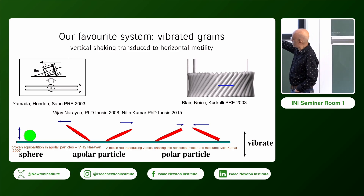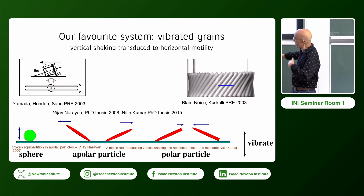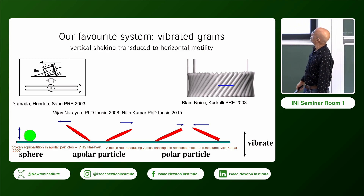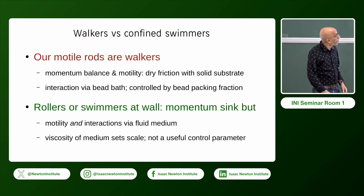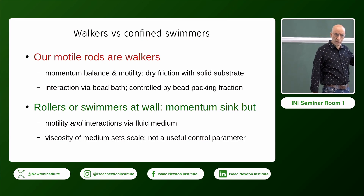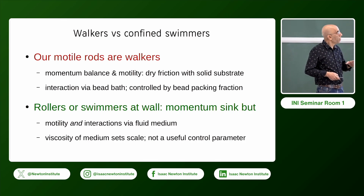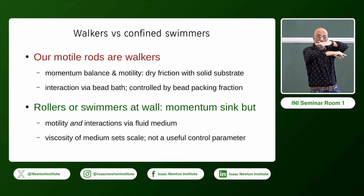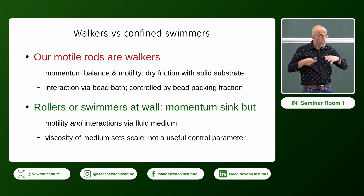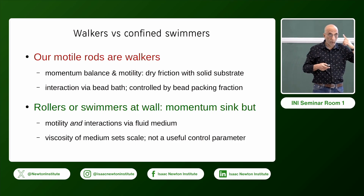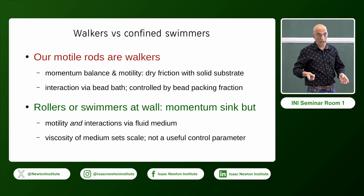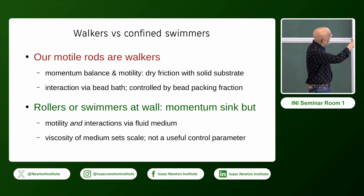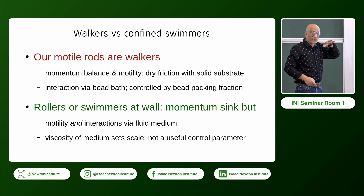This work started with PhD student Vijay back in 2007, Nitin more recently, and Raushan currently. The reason I'm spending extra time on this is to point out that there are two features that distinguish this kind of active matter from things in bulk fluid. Supposing you had a swimmer confined between two plates, in contact with a substrate and a wall — that's a momentum sink. These guys are also in contact with a momentum sink, but there's a very important difference. These guys are walking. If you think of the microorganism equivalent, it's like bacteria with pili. Momentum balance and motility both involve direct dry friction with the solid substrate.